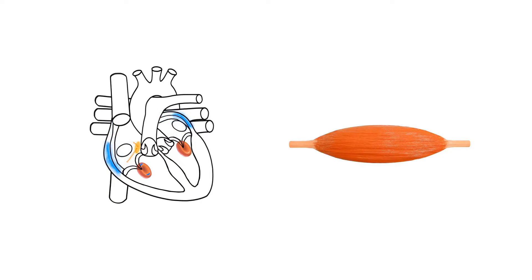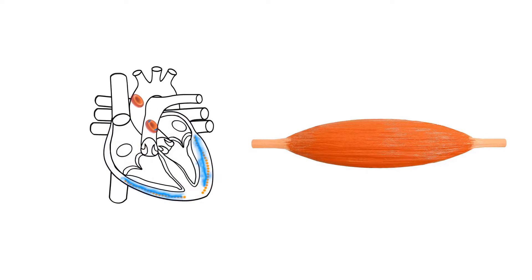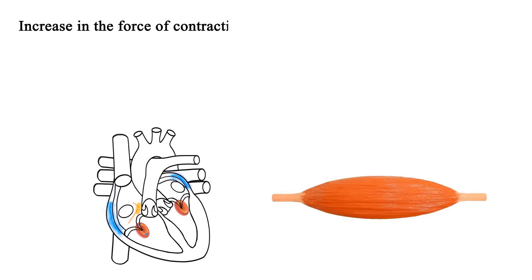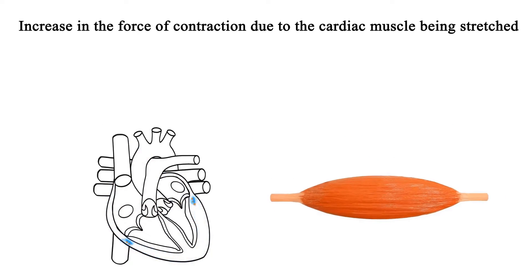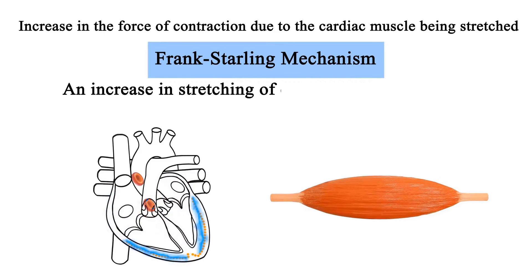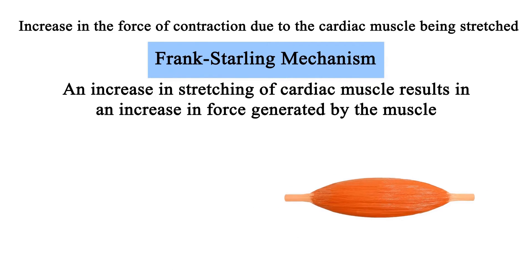This stretching of the ventricles means the cardiac myocytes are also stretched, which means that they contract with an increased force. This increase in the force of contraction due to the cardiac muscle being stretched is known as the Frank-Starling mechanism. The Frank-Starling mechanism states that an increase in stretching of cardiac muscle results in an increase in force generated by the muscle.